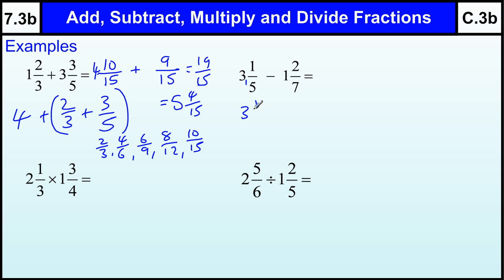So 3 and 1 fifth can be changed into 3 is going to be 15 fifths plus 1 makes 16 fifths. So we've got 16 over 5 minus 1 and 2 sevenths. So 1 is 7 sevenths and 2 sevenths makes 9 sevenths.